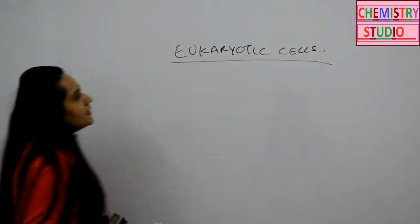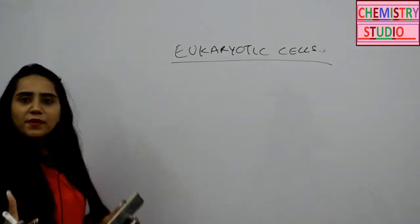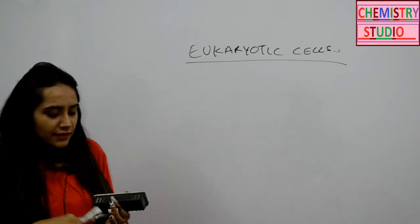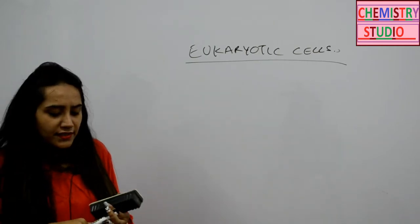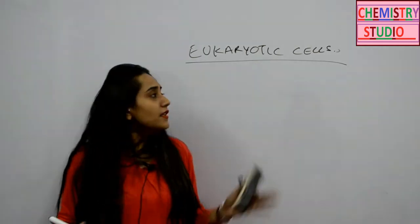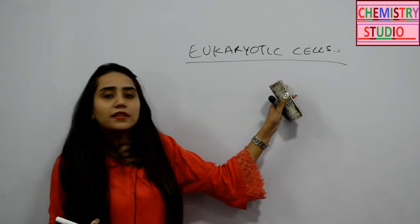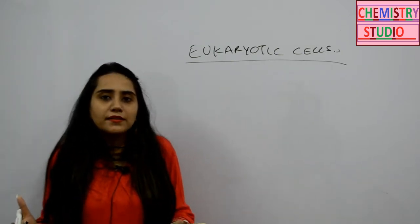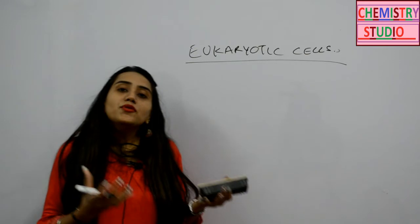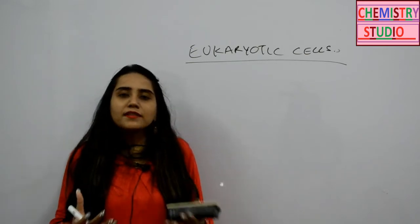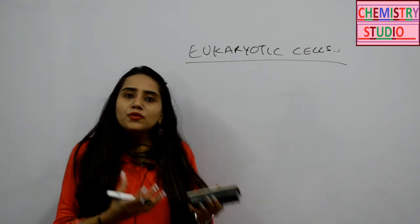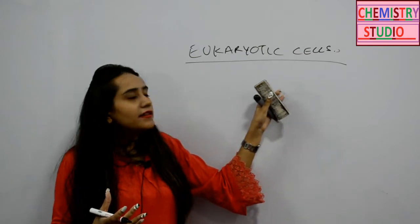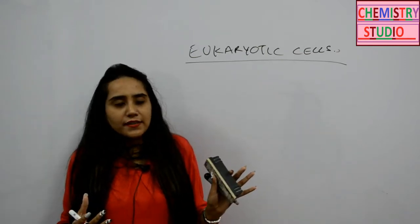Eukaryotic cells are more complex as compared to prokaryotic cells. As we discussed earlier, prokaryotic cells lack many organelles that are present in eukaryotic cells, because prokaryotic cells are less complex. Whereas the eukaryotic system is more complex and multicellular in design, and that's why there are many organelles present here that are absent in prokaryotic cells.